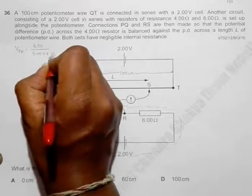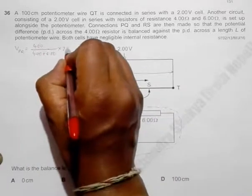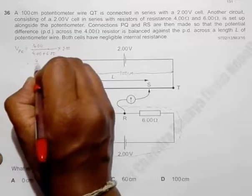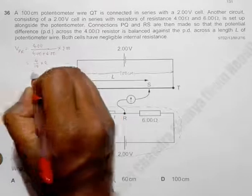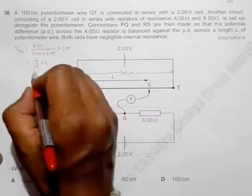So it will be 4 by 10 into 2, which will be equal to... 4 by 10 is 0.4, so 0.4 into 2...